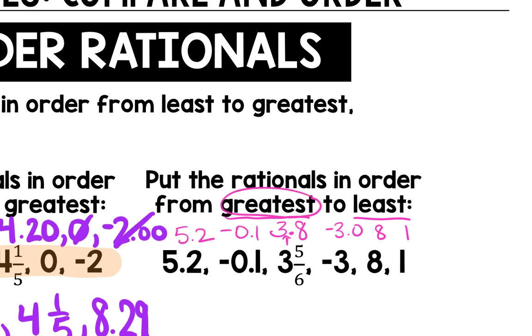So again, this direction says greatest to least, so I have 8 as the greatest, and then I have 5.2, 3 and 5 sixths, and 1. When we're talking about negatives, the bigger one is closest to 0, so that's going to be negative 0.1. And then last but not least, we have negative 3. So that goes in order, greatest to least.